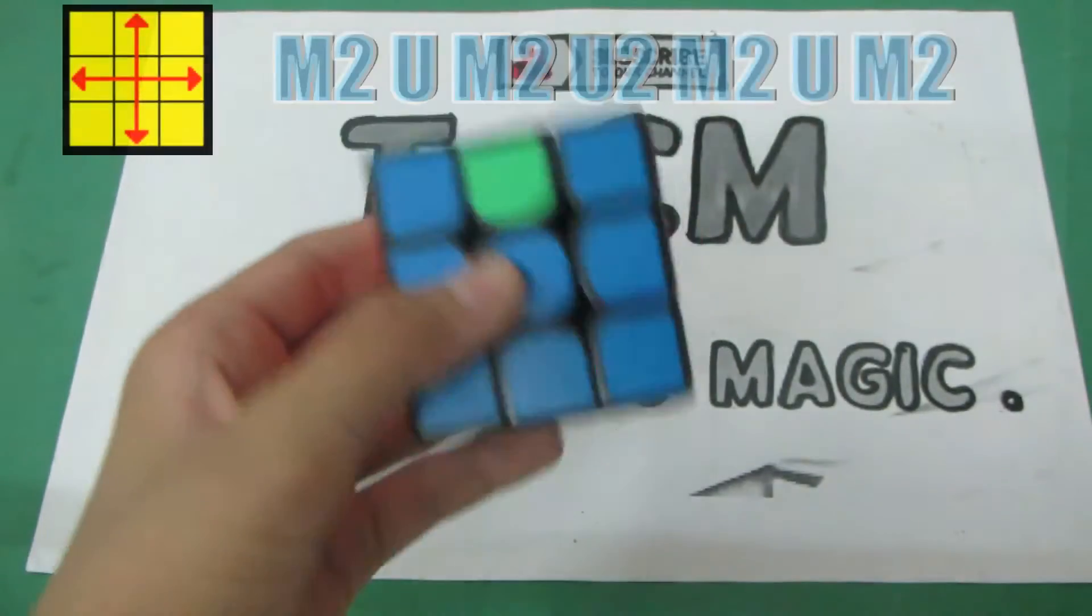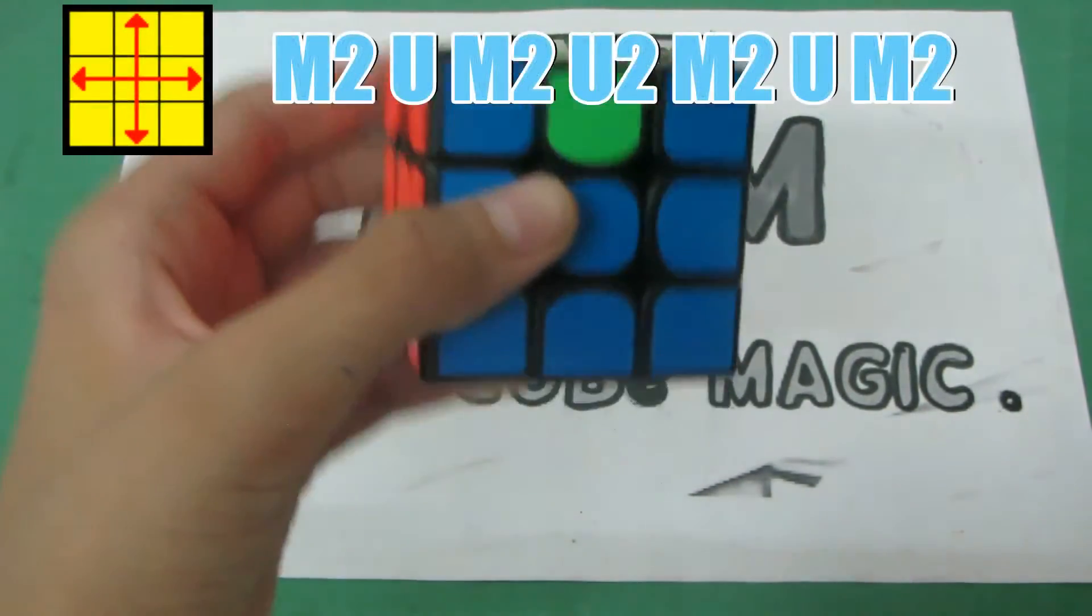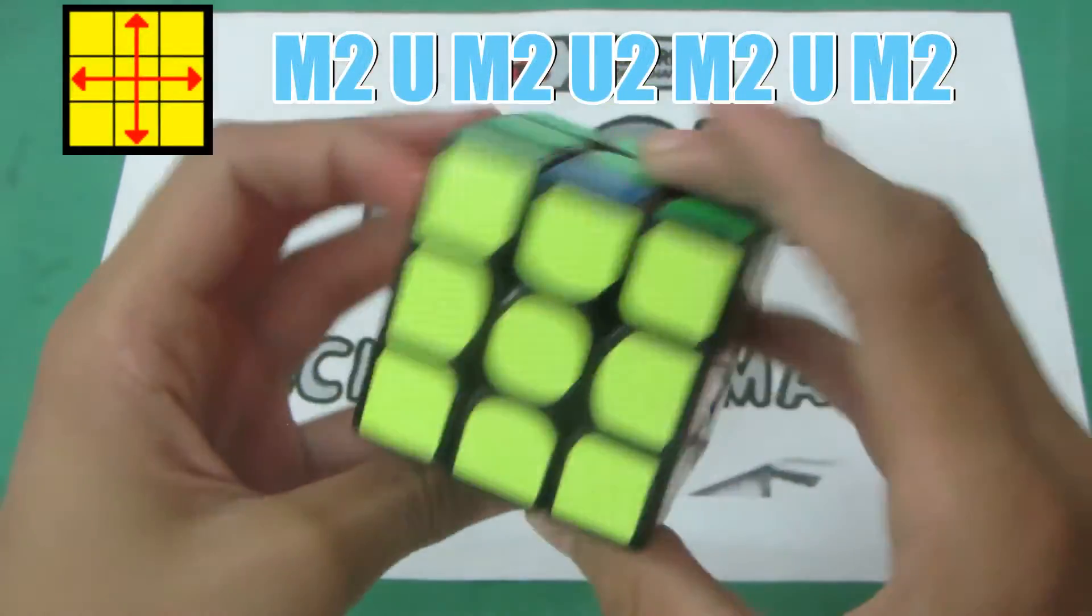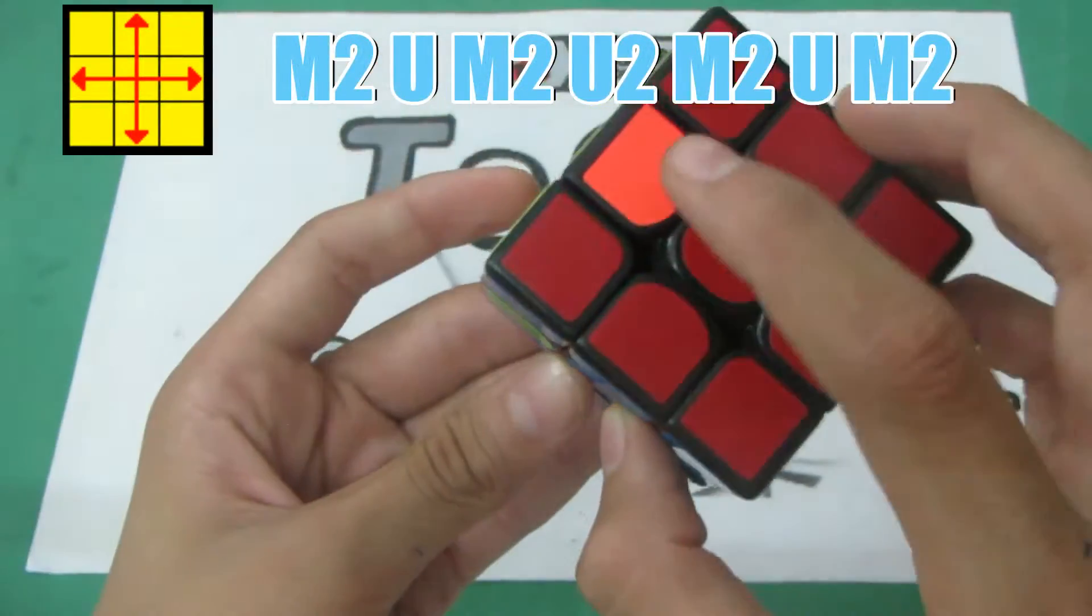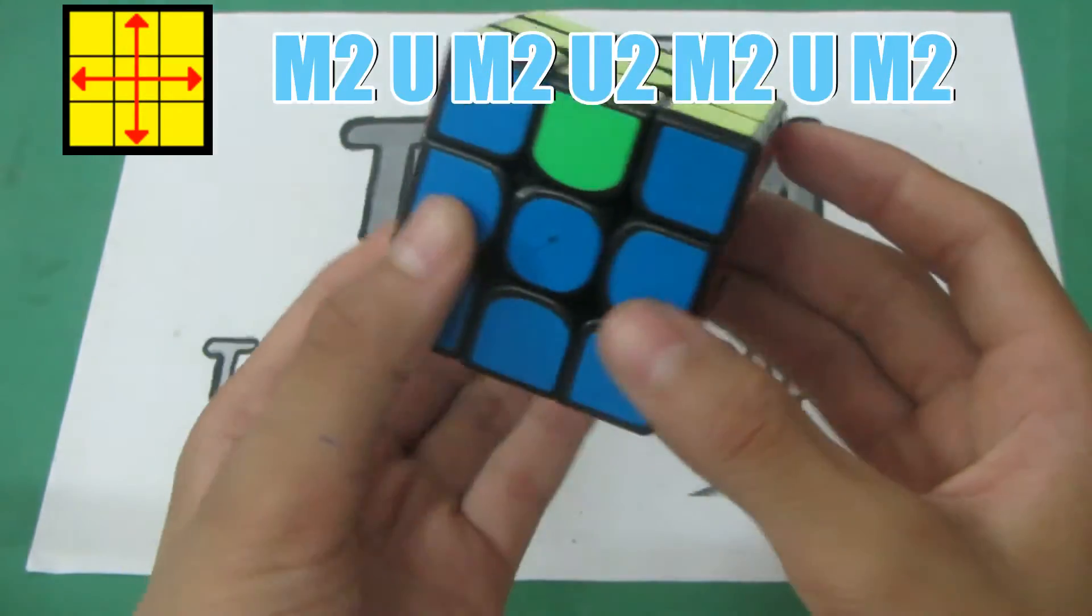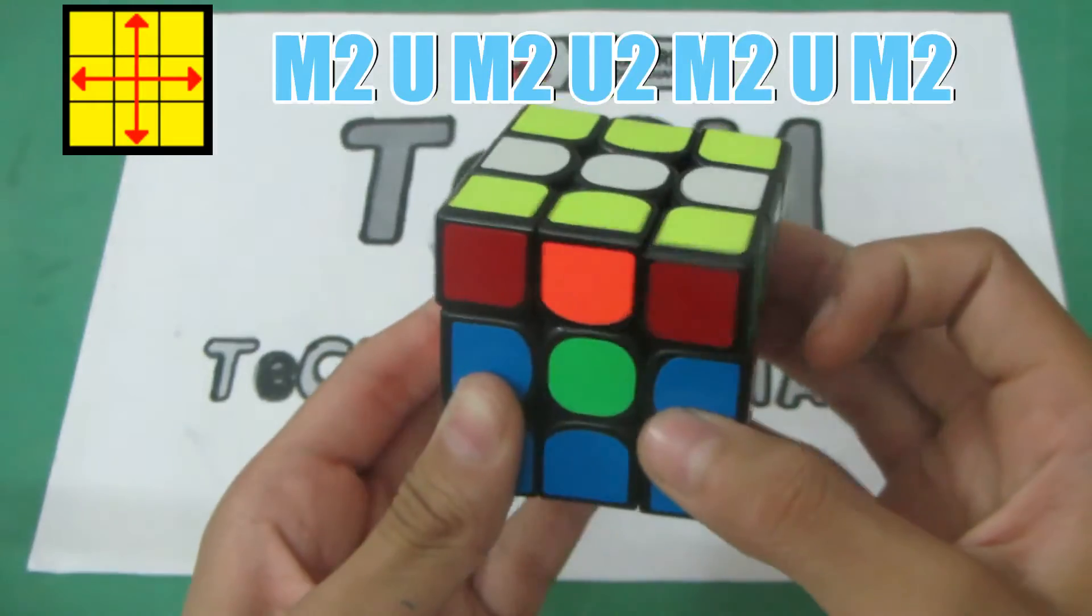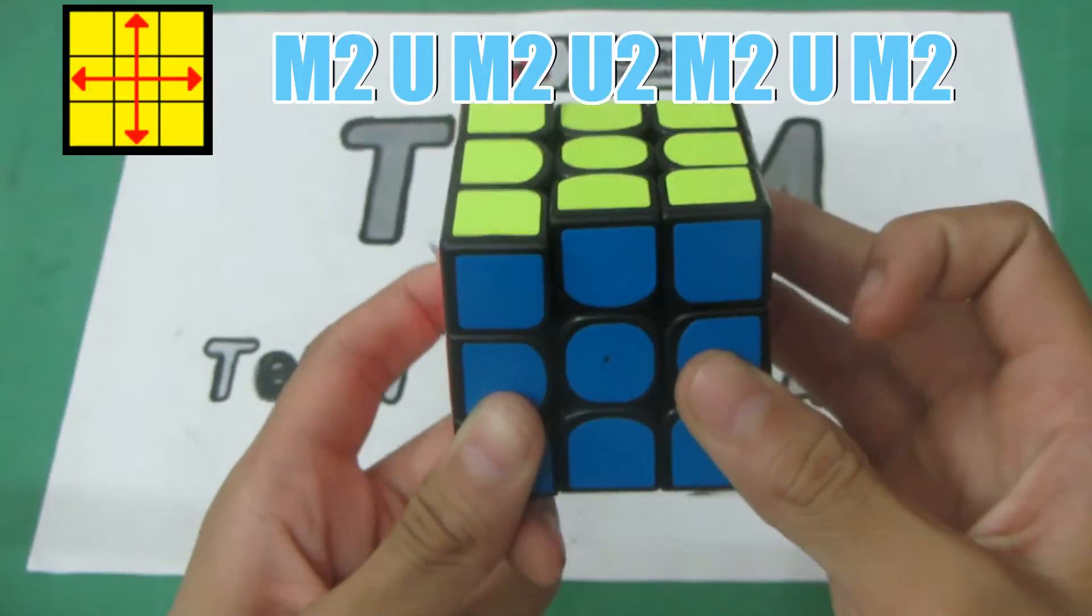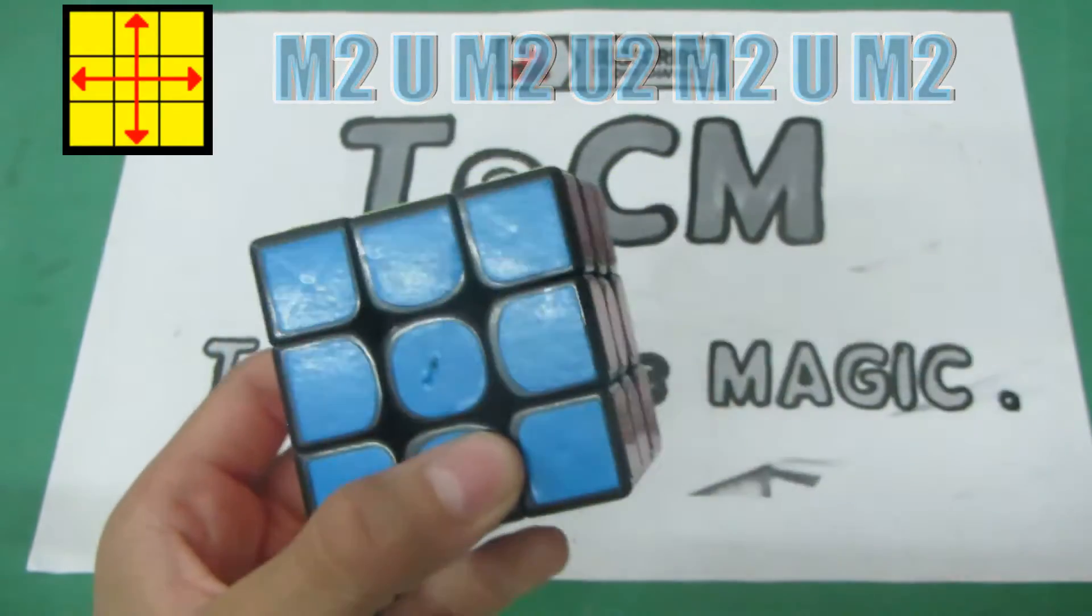Now the last algorithm of this tutorial is this one in which you need to swap these two corners, this one and this one and these two, this and this. The algorithm is M2 U M2 U2 M2 U M2. And that's it for the algorithms.